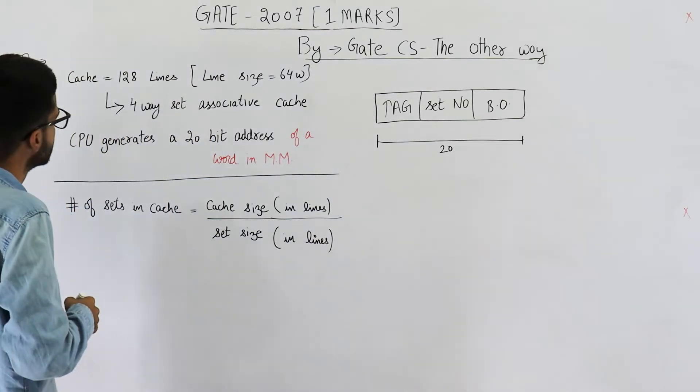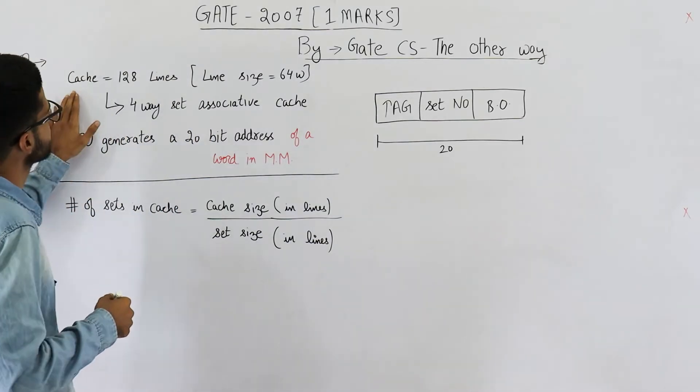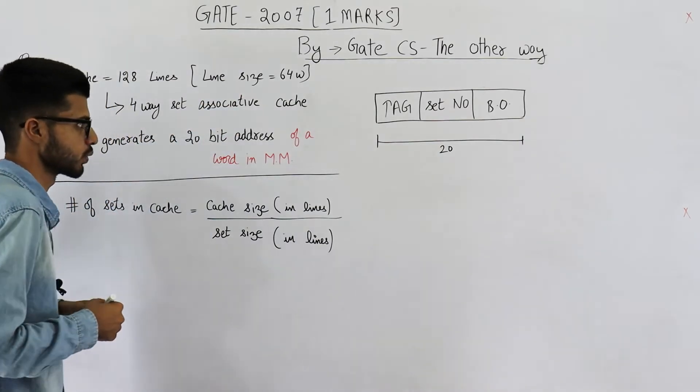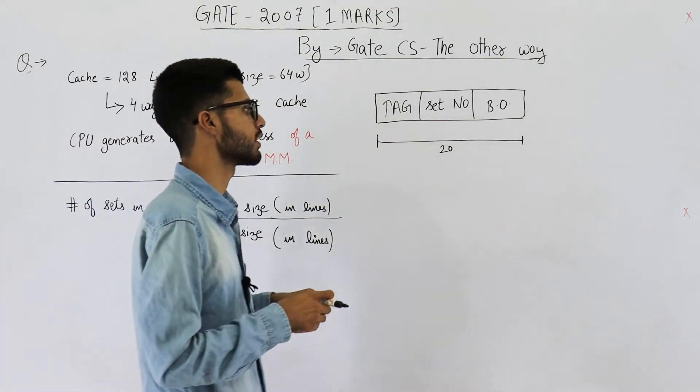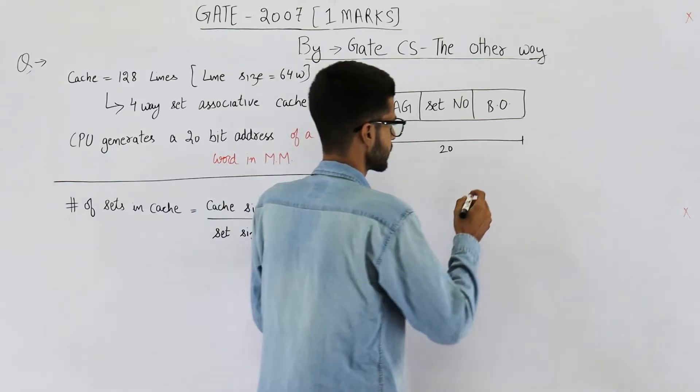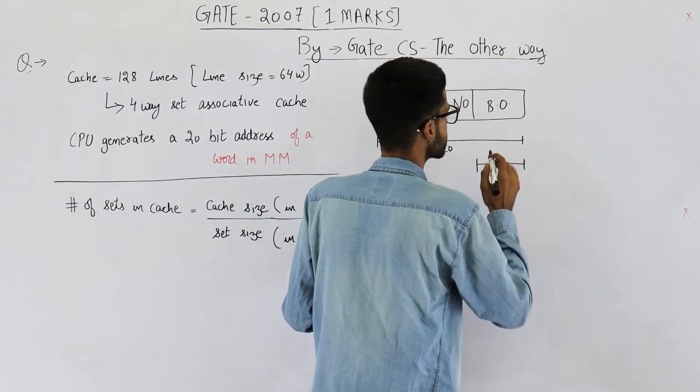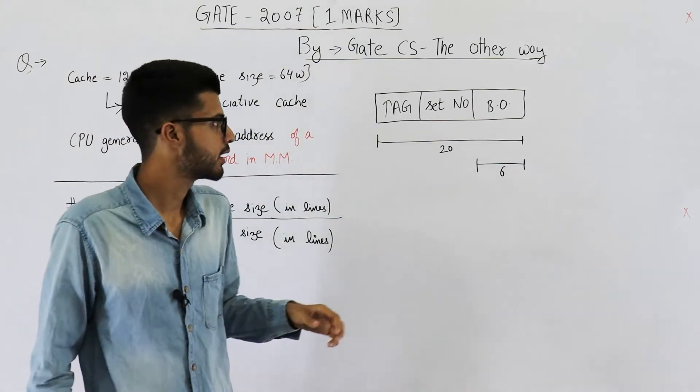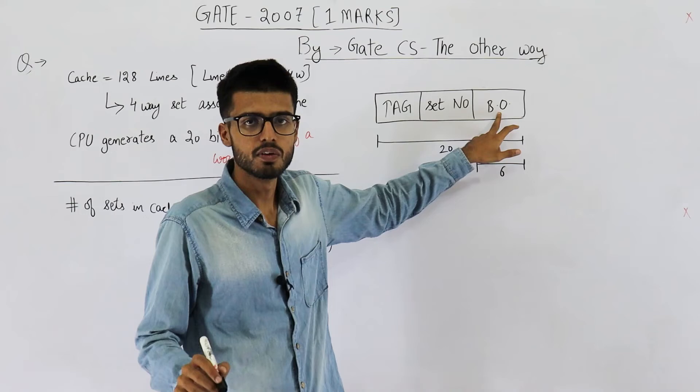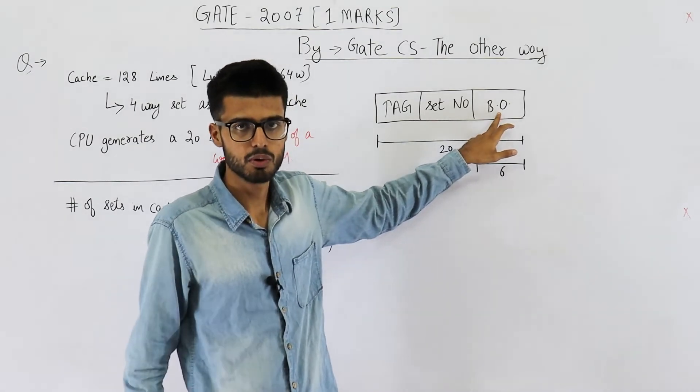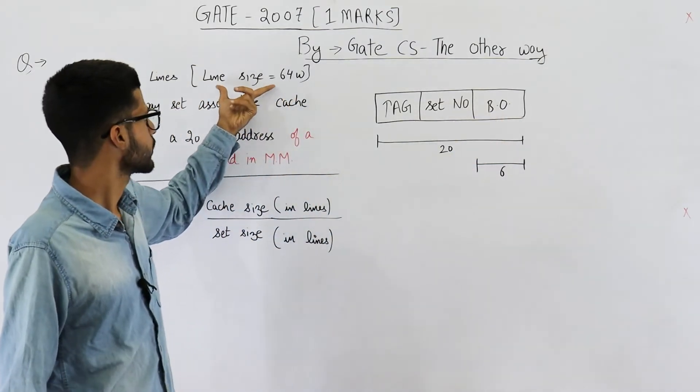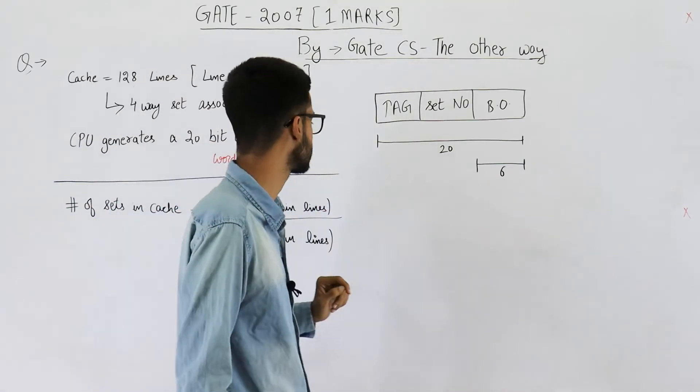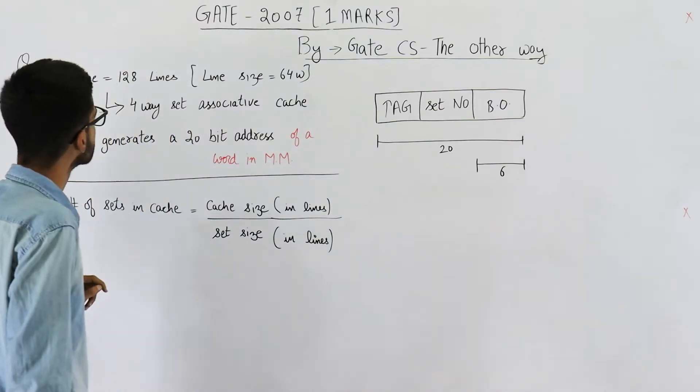Next thing is they are saying cache has 128 lines and size of each line is 64 words. 64 is 2 raised to the power 6. That means block offset field will be of 6 bits, because block offset is used to identify one word from the entire block. Now block or line consists of 64 words. To identify one of these you need 6 bits.